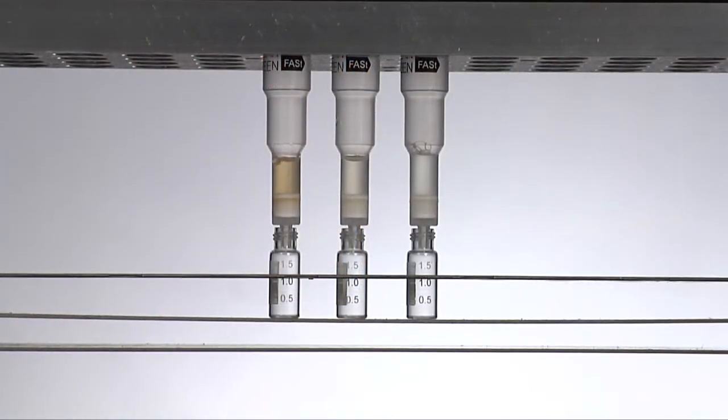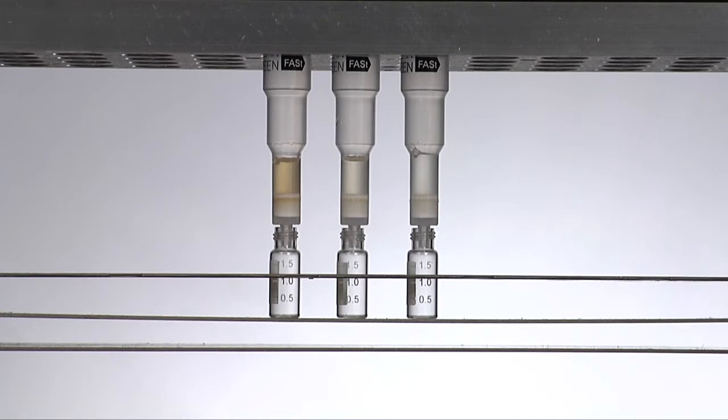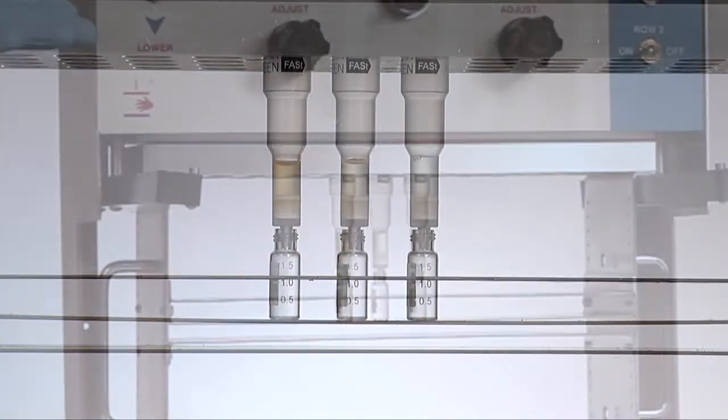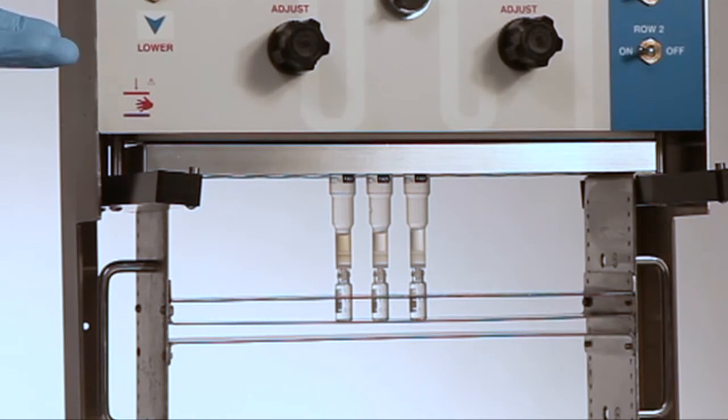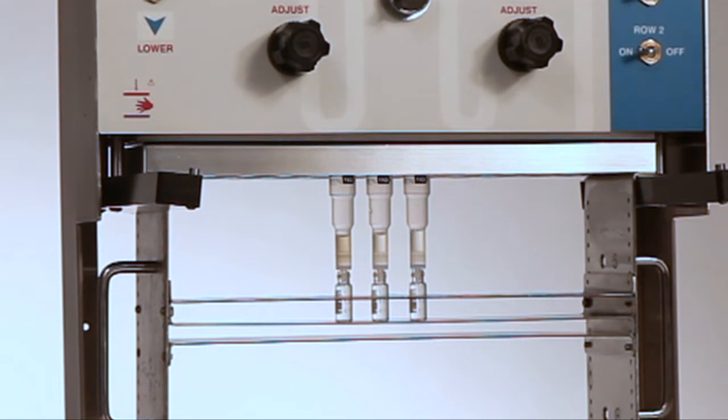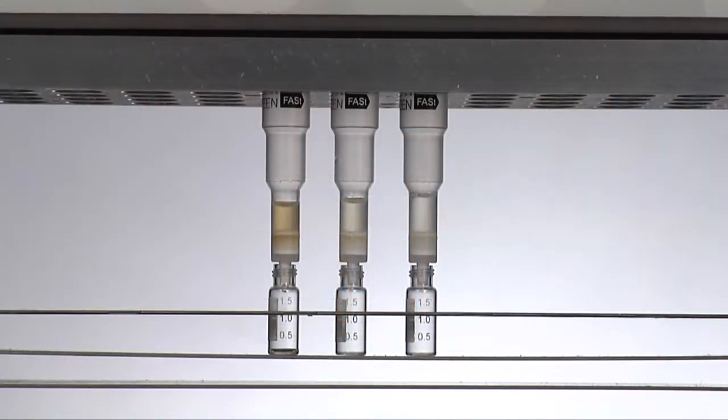Immediately you can see the samples are getting pushed through. What this is designed to do is take out any unwanted matrix, as you can see immediately on the cartridge to the left where the brown color, which is the matrix from the sample, is adhering to the sorbent.